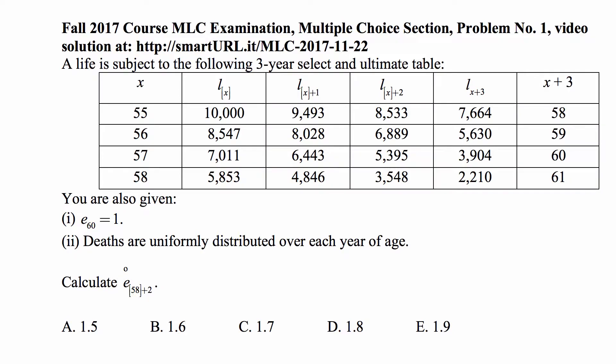You are also given that E₆₀, the curtailed life expectancy at age 60, is 1.